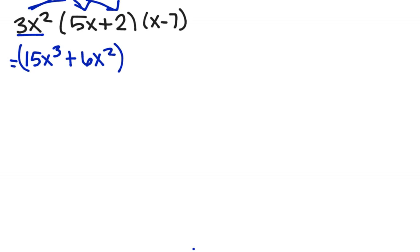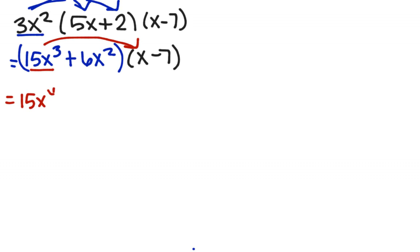3x squared times positive 2 is positive 6x squared. We put that in parentheses because we have not yet multiplied by x minus 7, which comes down. Quick check: can we combine any like terms in that first parentheses? No. So we distribute again. 15x cubed times x gives 15x to the 4th — adding our powers. 15x cubed times negative 7 gives negative 105x cubed.